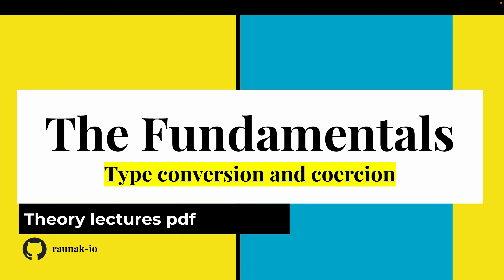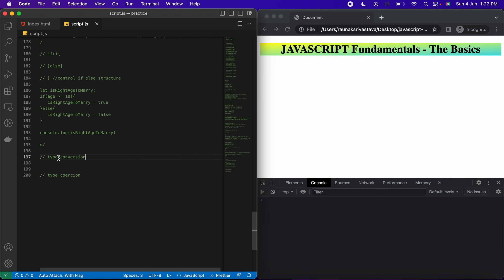We will be going back to our data types examples to understand type conversion and type coercion, because this is something we use most of the time while coding. Type conversion is when we change the type of one value to another manually. Type coercion is when JavaScript changes the type of a value under the hood automatically. We'll see examples of type conversion first.